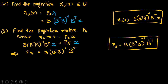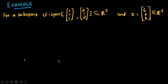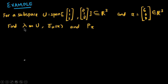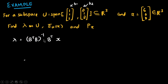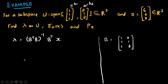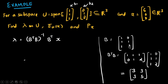Let's take an example. The subspace U spans two vectors: [1,1,1] and [0,1,2] — these are the two basis vectors b1 and b2. The vector to project is x = [6,0,0]. We need to find lambda, pi_U(x), and the projection matrix P_π. Matrix B has b1 as the first column and b2 as the second column. Computing B^T B gives the 2×2 matrix with entries 3,3 and 3,5.